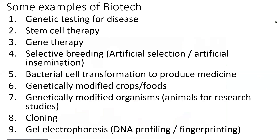Selective breeding, also called artificial selection, means the same thing — we pick and choose which organisms we want to reproduce and use the results as a higher quality organism. We also have technology where we can actually change the DNA of an organism, like changing the DNA of a bacterial cell and giving it the ability to make human proteins, which we then use for administering medication to people like diabetics.